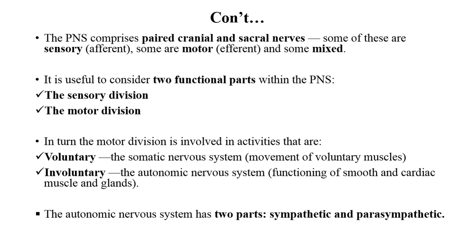The peripheral nervous system is further divided into two parts: the sensory division and the motor division. The sensory division detects signals from the environment, and the motor division carries signals from the brain to the effector organ. The motor division is further divided into voluntary — the somatic nervous system — and involuntary — the autonomic nervous system — which controls the function of smooth and cardiac muscles.